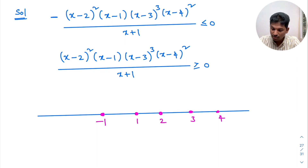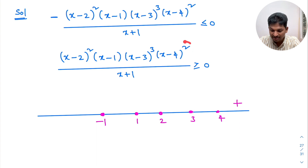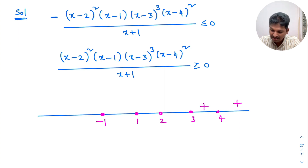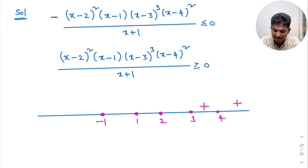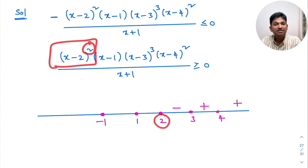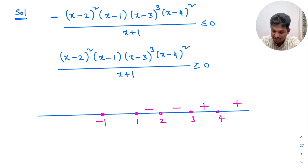In the rightmost corner, keep plus. Now: 4 is from (x-4)² — even power, so sign doesn't change, remains plus. 3 is from (x-3)³ — odd power, so sign changes: plus becomes minus. 2 is from (x-2)² — even power, so sign doesn't change: minus remains minus.